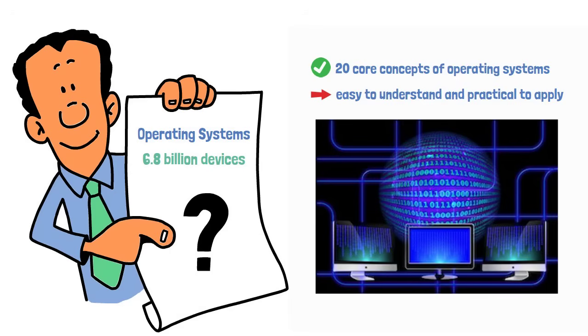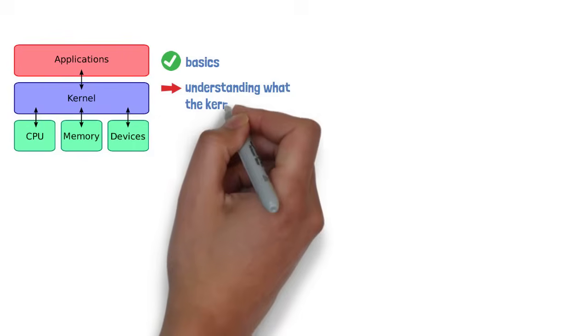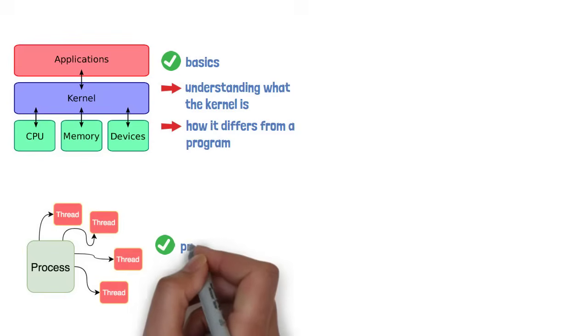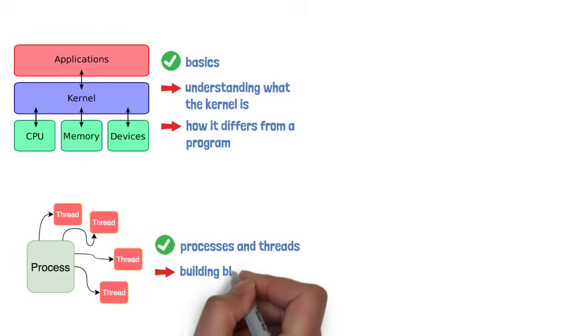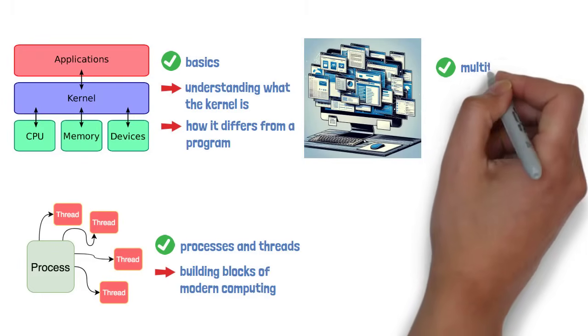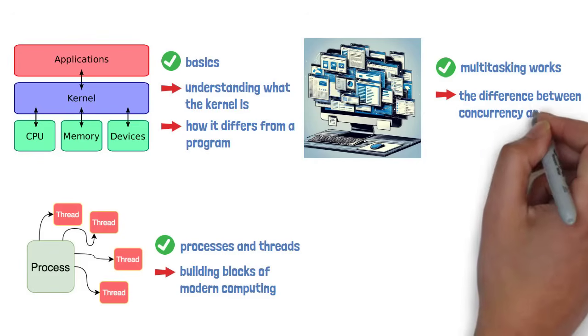So what exactly are we going to cover? First, we'll start with the basics, understanding what the kernel is and how it differs from a program. Then we'll dive into processes and threads, the building blocks of modern computing. Next up, we'll explore how multitasking works, and we'll break down the difference between concurrency and parallelism.